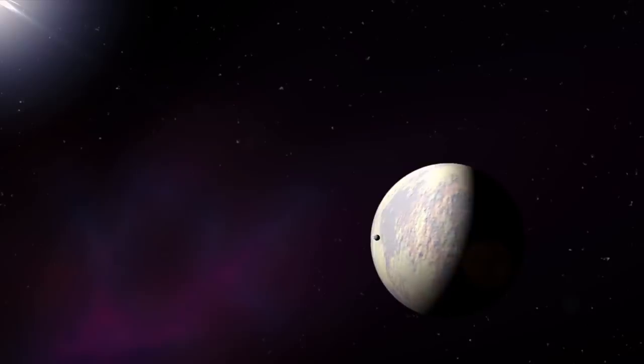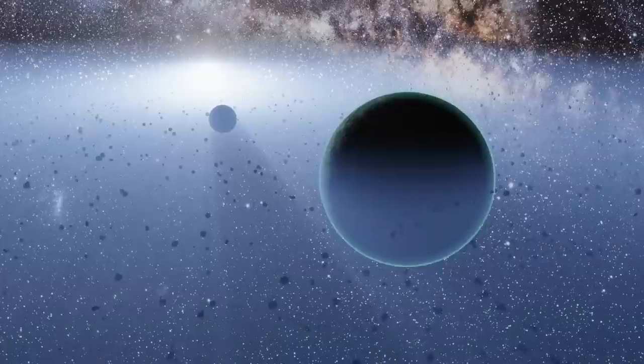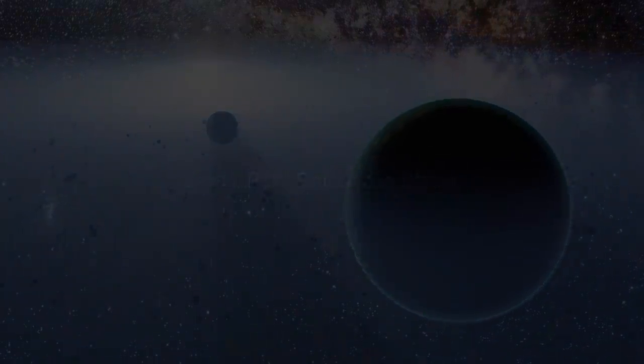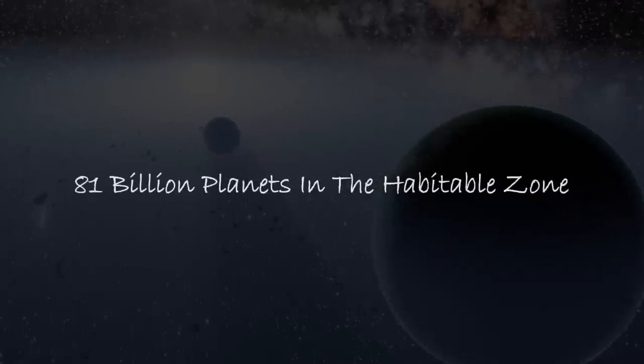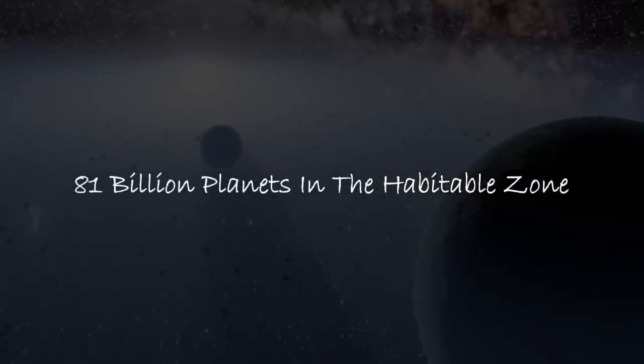The fraction of planets in the habitable zone is assumed to be around 1 to 2 per solar system. If we assume 1.5 this leaves us with 81 billion planets in the habitable zone in our Milky Way.